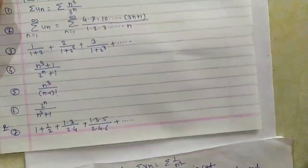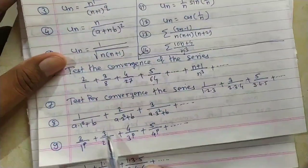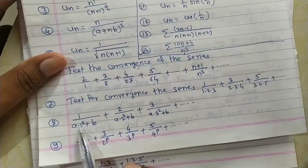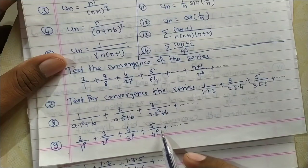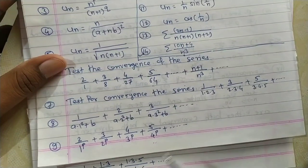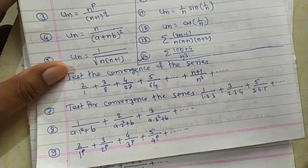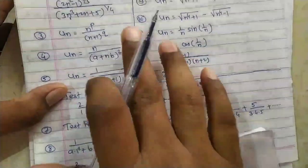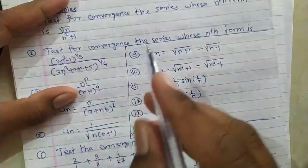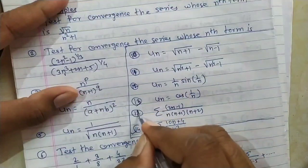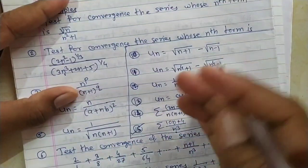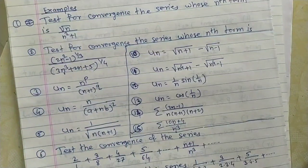Problem 8 is a simpler problem — try it yourself: series 1/(a·1² + b) + ... Problem 9 is also straightforward — find the nth term and write the solution. We will now take Problem 10.